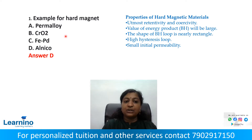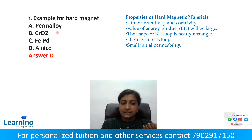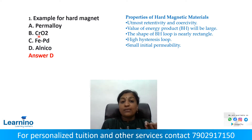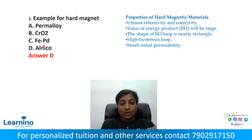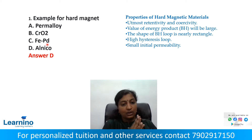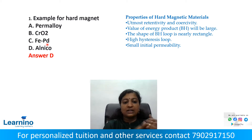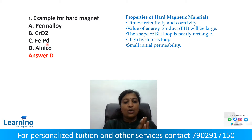The options are: Permaloy — a nickel and iron alloy. Next, Chromium Oxide. Then FEBD. Then Palladized Iron — that is also an alloy. And Alnico — it is also an alloy.